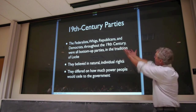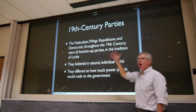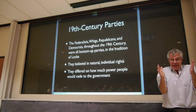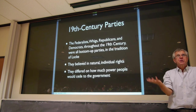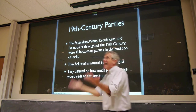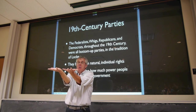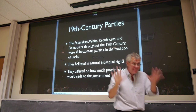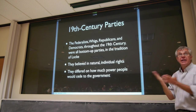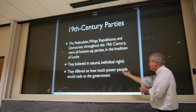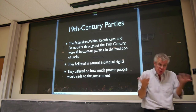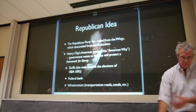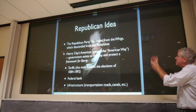What on earth happened? In the 19th century, really all of the parties — the Federalists, the Whigs, the Republicans, the Democrats — they were all what you might call bottom-up parties. They were all in the tradition of John Locke. The question is what exactly am I willing to give up in exchange for impartial judgment? They disagreed about the details, but more or less they all shared the same basic political philosophy. They all believed in natural and individual rights.